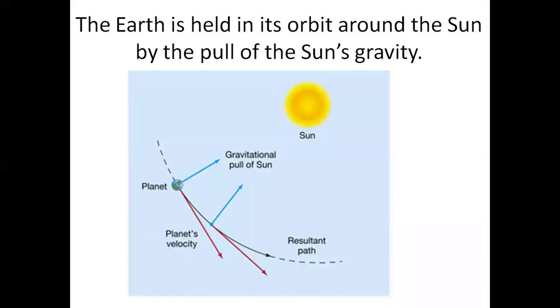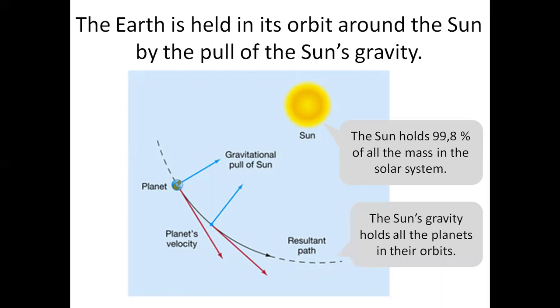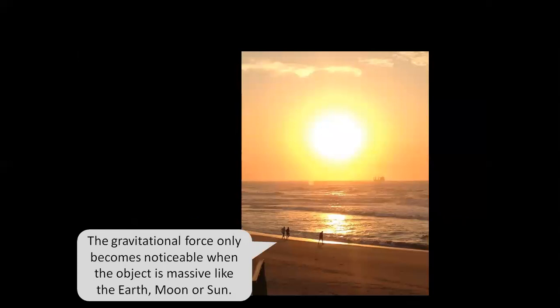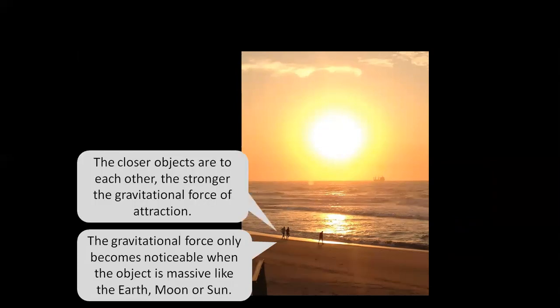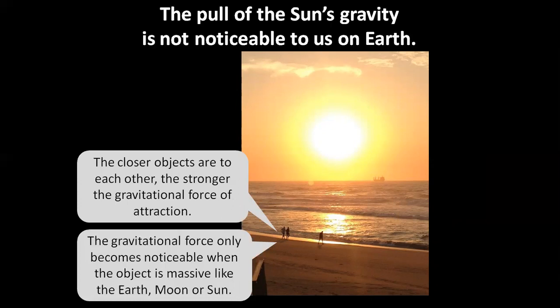The earth is held in its orbit around the sun by the pull of the sun's gravity. The sun holds 99.8% of all the mass in the solar system. The sun's gravity holds all the planets in their orbits. The gravitational force only becomes noticeable when the object is massive like the earth, moon or sun. The closer the objects are to each other, the stronger the gravitational force of attraction. The pull of the sun's gravity is not noticeable to us on earth, because the sun is so much further away from us.